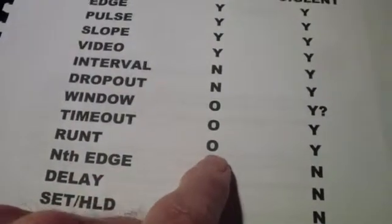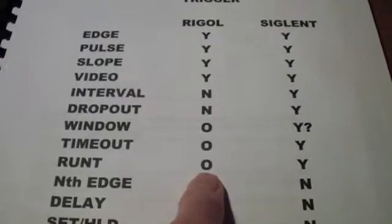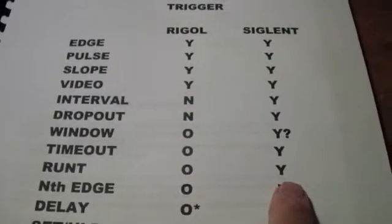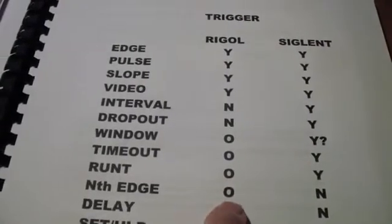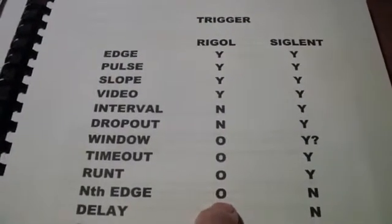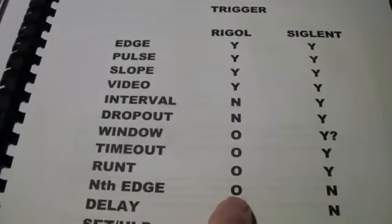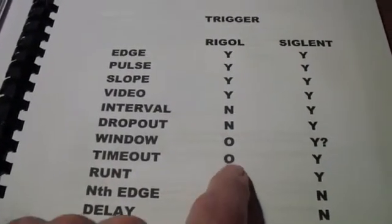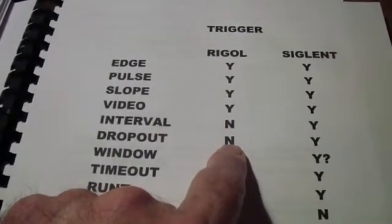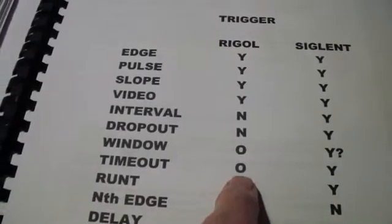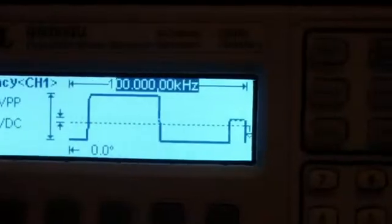Now let's move on and look at a few of the Rigol trigger functions — some of which are identical to the Siglent, some of which are superior, like nth edge, because the Siglent doesn't have that, and some that are inferior, like timeout, where Siglent's dropout appears to be timeout plus more.